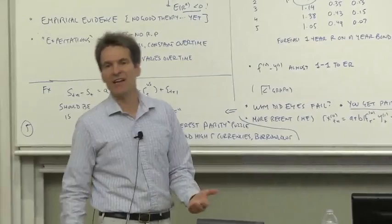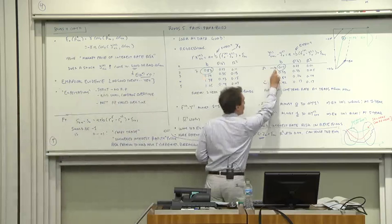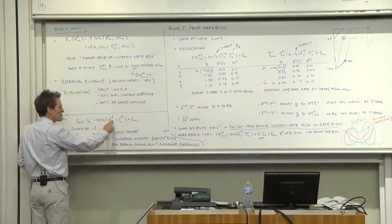This pattern happens everywhere. It's the same pattern you saw in dividend yields and stock returns. High prices relative to dividends forecast a risk premium, not increases in dividend growth. High forward rates relative to spot rates forecast a risk premium, not an increase in spot rates.